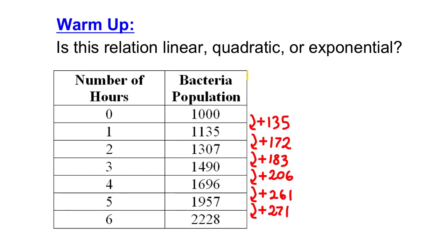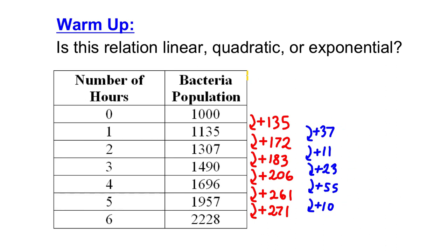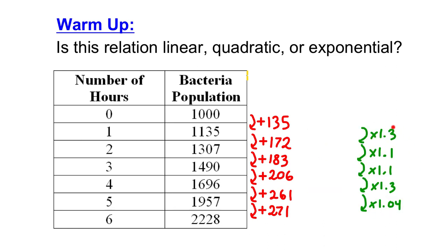You might have tried to find the first differences, and you'll notice they're not all the same — not even close. So then you try the second differences, and they're not all the same either. So I can conclude this is not linear, and it's not quadratic. So then I try to find the ratios between my first differences, and I see that they're not all the same either. So it's not exponential, I guess.